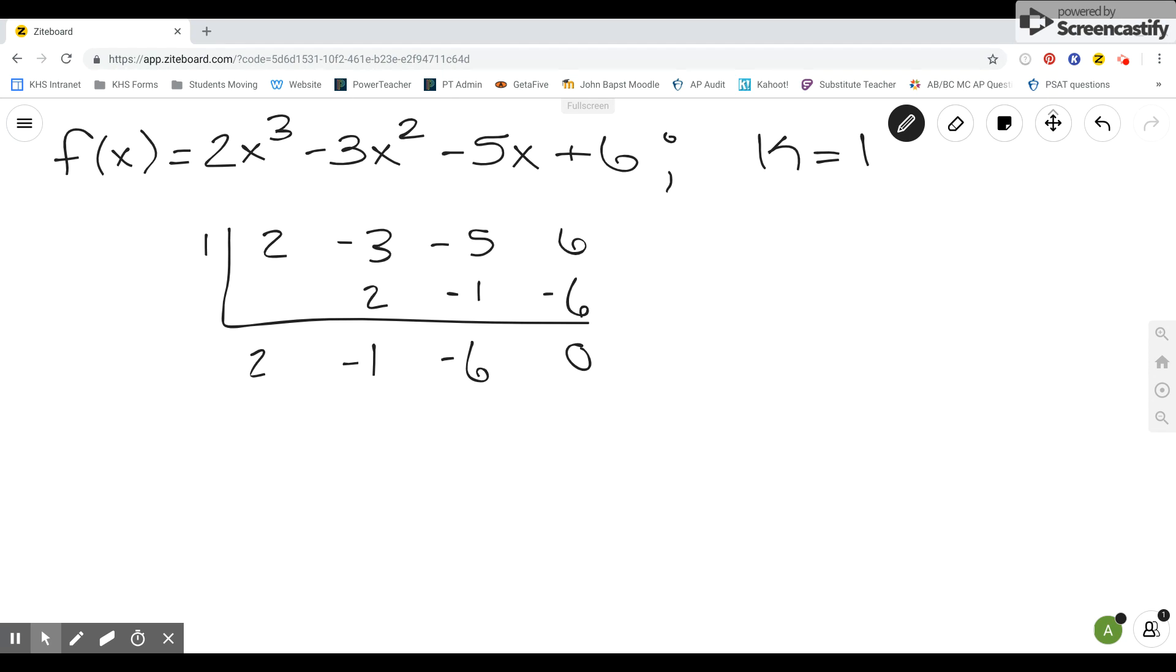So now we can write f of x as the two factors we now have. So using k equals 1, we know that a factor is x minus 1. And our new factor that we found using synthetic division is 2x squared minus x minus 6.